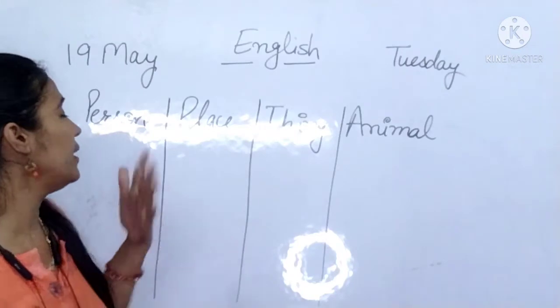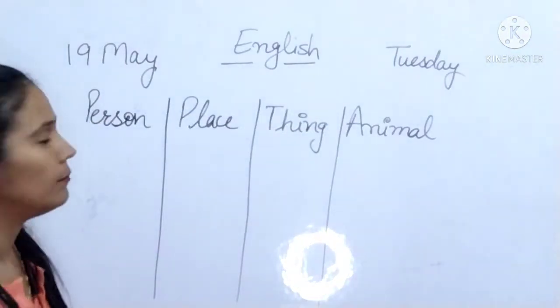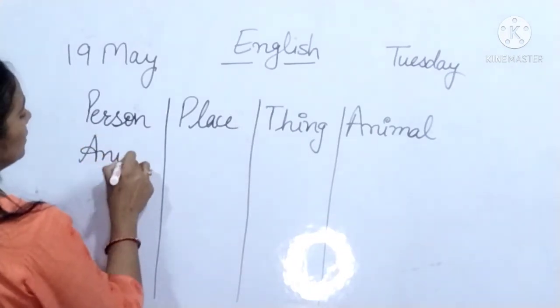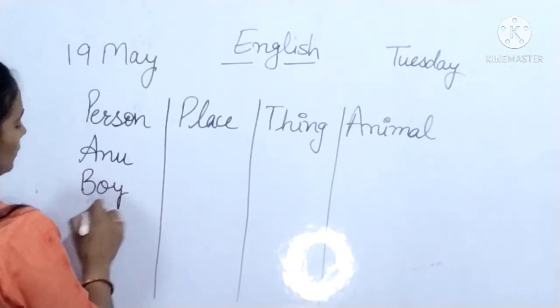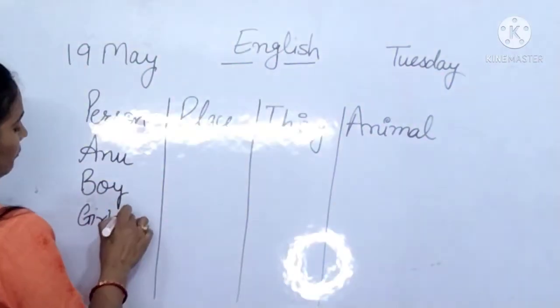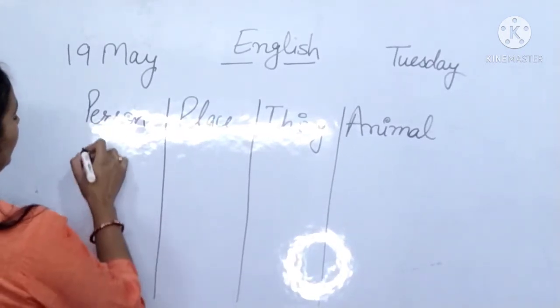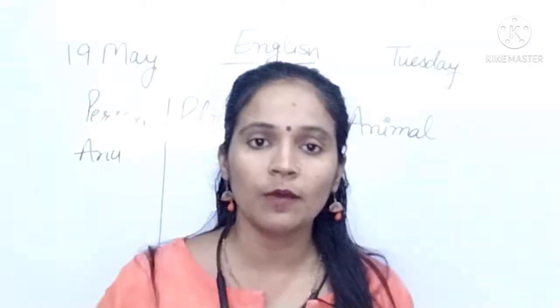Tell me any person name. I like my name, so I am writing here my name — Anu. Or any boy, any girl, you could write mother, father, boy, girl, uncle, aunt, grandfather. So these are the person names.